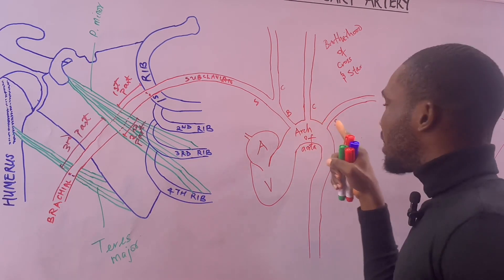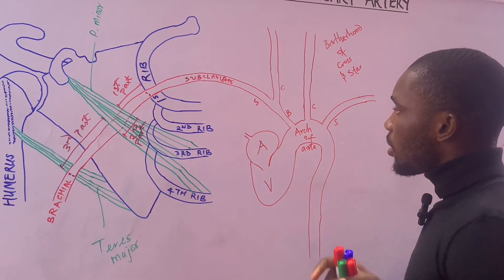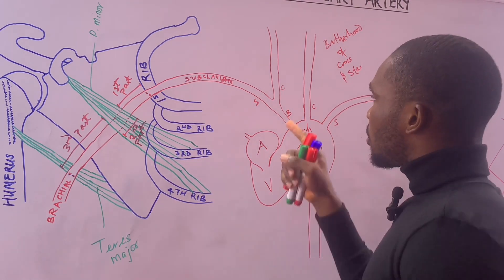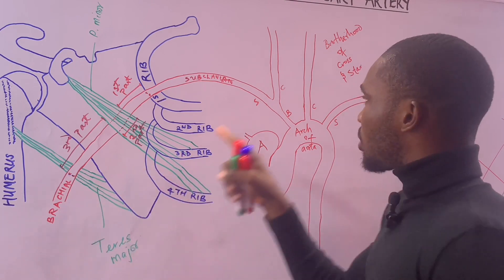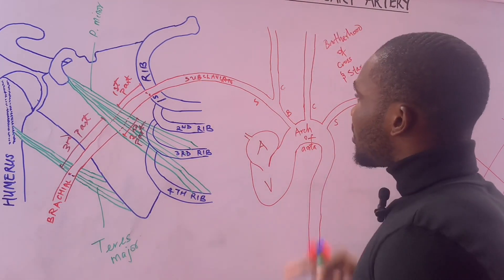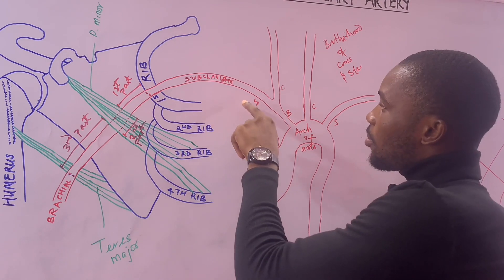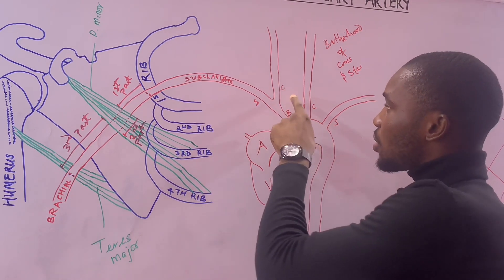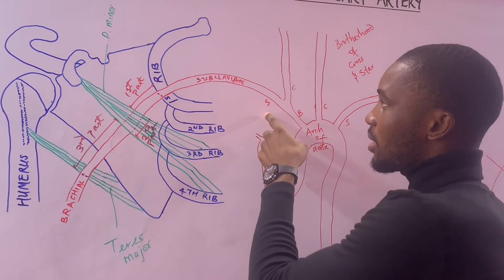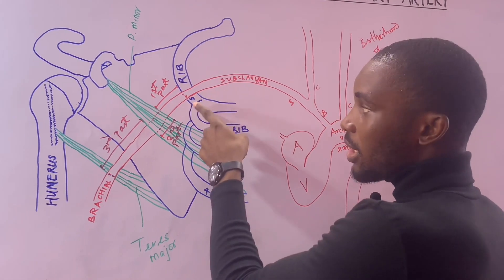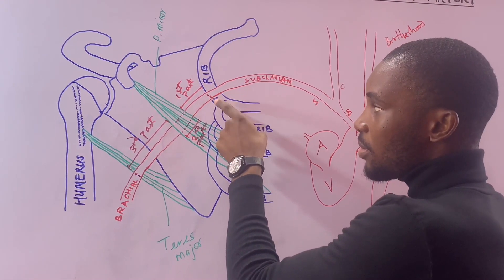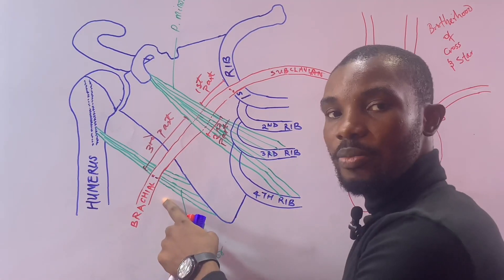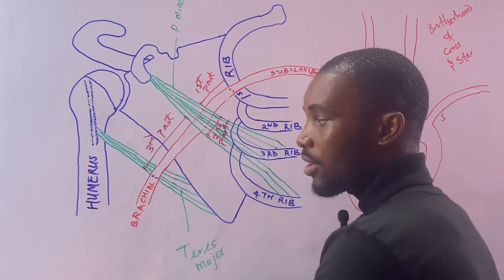The brachiocephalic is a compound word — 'brachio' and 'cephalic.' The subclavian branches from the brachiocephalic for the arm side, and the common carotid branches for the head. The subclavian then moves to enter the axilla, and at the outer border of the first rib it is called the axillary artery, up until the lower border of the teres major where it becomes the brachial artery, running along the arm.